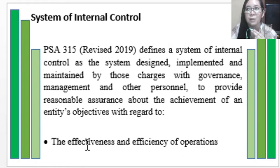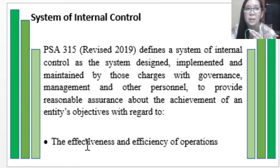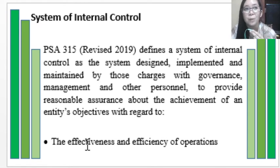Another reason for having an internal control system is to ensure that operations are effective and efficient. The internal control system will include policies about how a process should be done effectively and efficiently — how to minimize cost and wastage, and how to maximize profit-generating activities. Those guidelines and policies represent the form that internal controls may take.